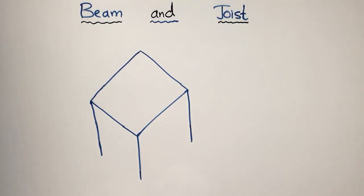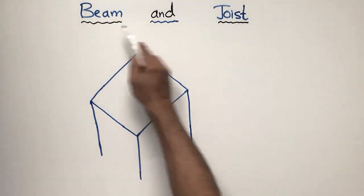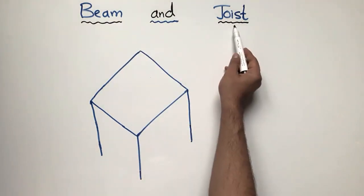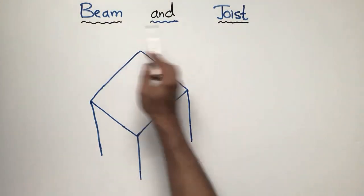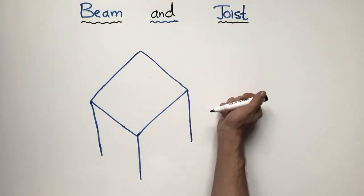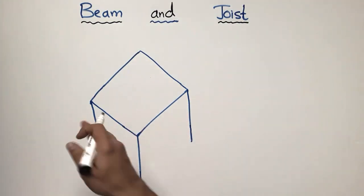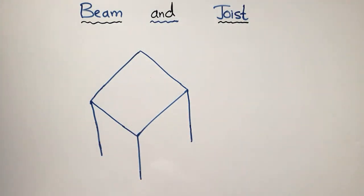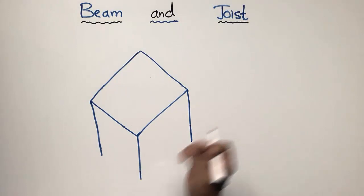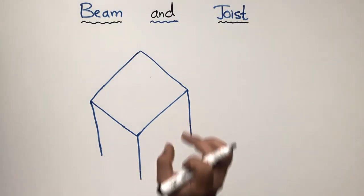Hello guys, welcome back to the Seven Engineering YouTube channel. Please subscribe for daily Seven Engineering videos. Today our lecture is about the difference between the beam and the joist. These both are horizontal structural members used to take the load and to transfer this load to the columns and then to the foundation.